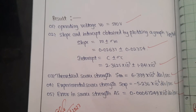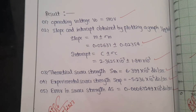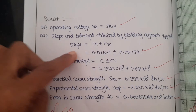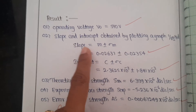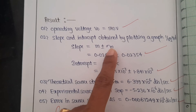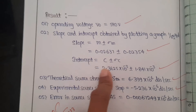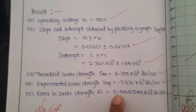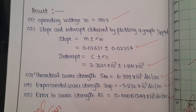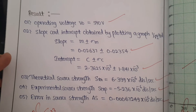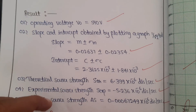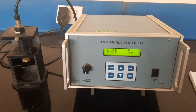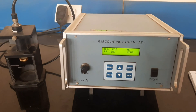At the end, write the result: operating voltage, slope and intercept from the graph of 1/√I versus distance, slope m ± error in slope, intercept c ± error in intercept, theoretical source strength, experimental source strength, and error in source strength. These values are calculated using the LSF method from tabular column 5. I hope this video is helpful for doing this experiment. Thank you for watching.